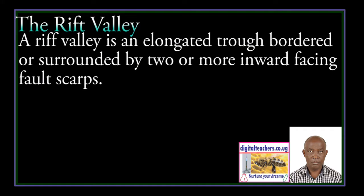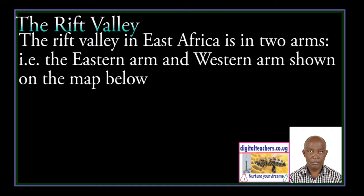A Rift Valley is an elongated trough, bordered or surrounded by two or more inward-facing escarpments. The Rift Valley in East Africa is in two arms: the eastern arm and the western arm, as shown in the map below.